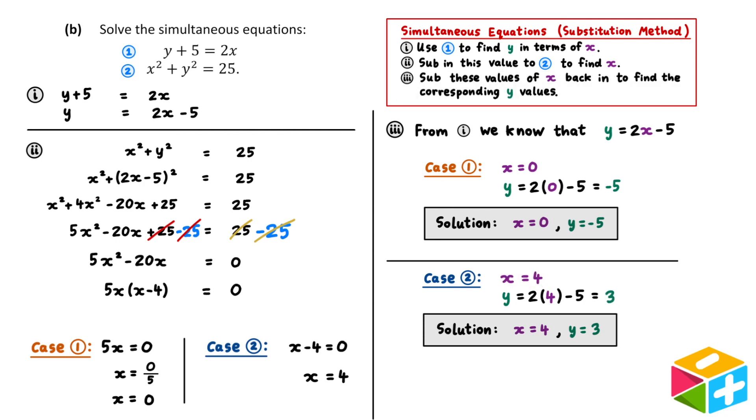Our final answer consists of two solutions: x equals 0, y equals minus 5, and x equals 4, y is equal to 3.